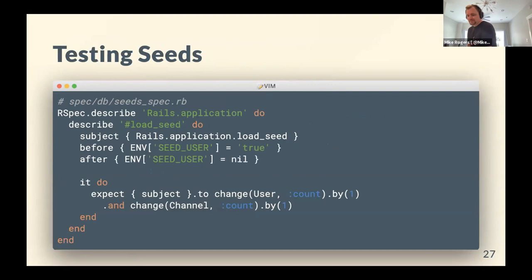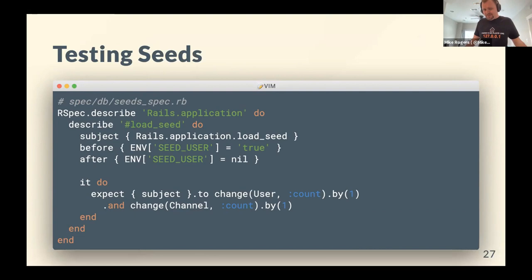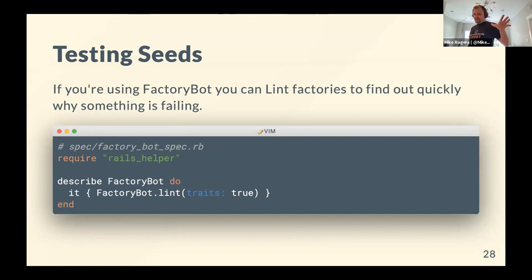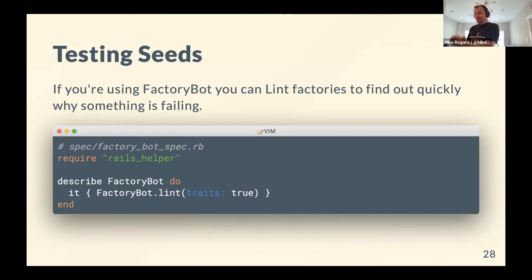Most people don't actively test their seeds because they run `rails db:seed` often, but if you use the environment variable technique I discussed, you could just have a quick test that checks: does this thing run without error and actually create some stuff in the database? If it ever breaks in CI you'll know about it, fix it, and that initial developer experience will always be working. The other benefit of using Factory Bot is you can lint the factories — if you're linting them you know they're always going to work perfectly, and if there's a problem it'll raise quickly and be very specific.